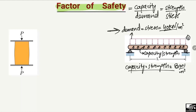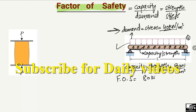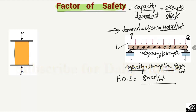The ratio of these two terms gives us the factor of safety for this beam. Factor of safety equals capacity divided by demand, which is 80 kN per square meter divided by 40 kN per square meter. The units cancel, and dividing 80 by 40 gives us 2. So the factor of safety for this beam section is 2.